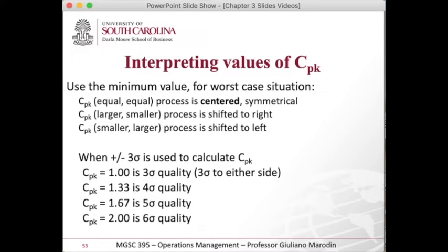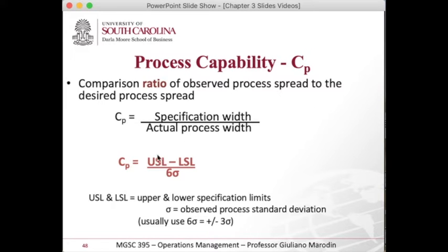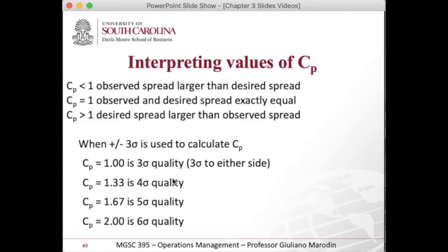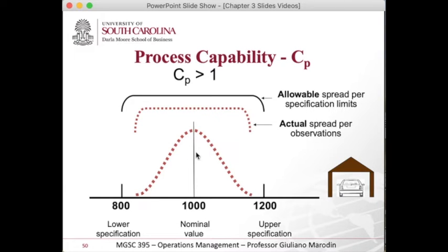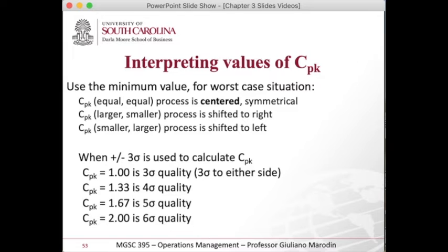Why is that important? Because now I can understand if it fits to the right or if it fits to the left. The CP, where we were before, is just the size of the car — upper and lower specification divided by three sigma. So, if the distribution was shifted here or there, I wouldn't know. I only know if the size matched or not. The CPK index will actually tell me if it's centered or not. If these two values — the one on the left and the one on the right — are exactly the same, it means it is centered. It is symmetrical and the mean is actually the midpoint between the upper and lower specification limits. If one is larger than the other, it means it shifts to the right or shifts to the left.